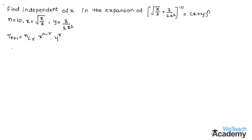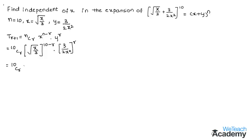Now let us replace the values of n, x, and y in this formula. We get 10Cr · (√(x/3))^(10−r) · (3/(2x²))^r. The square root of x/3 can be written as (x/3)^(1/2), giving (x/3)^((10−r)/2) · (3^r)/(2^r · x^(2r)).